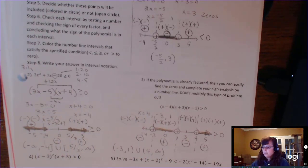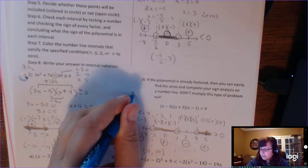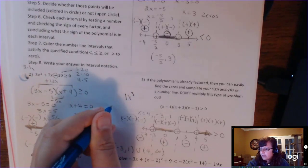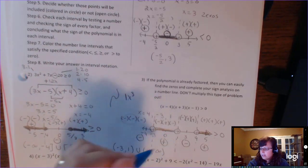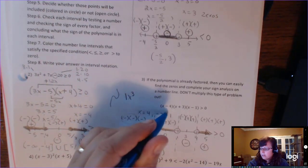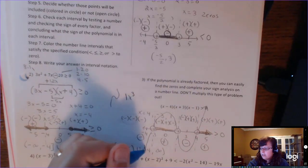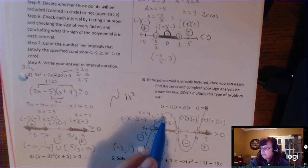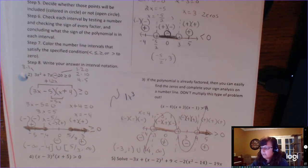Another way to solve this is to remember the leading term is x³, so the end behavior is down-up. You can plot the zeros and, since there's no multiplicity, go straight through each one. The regions above the x-axis are positive, so you can also use the graphing method to identify the solution.